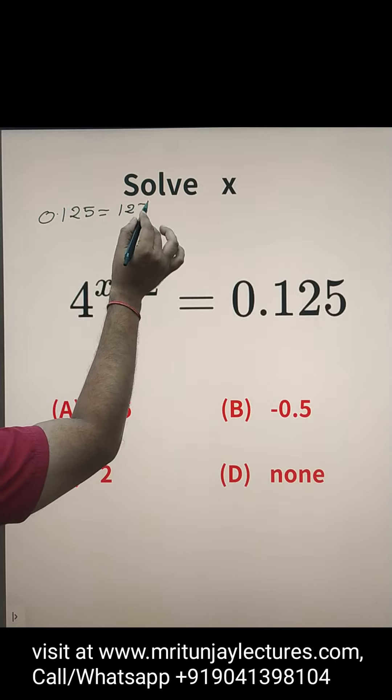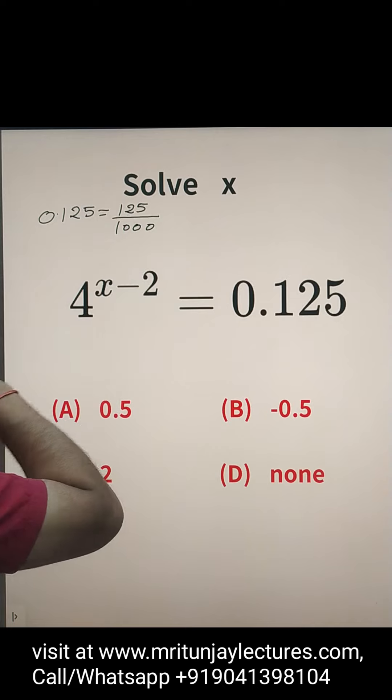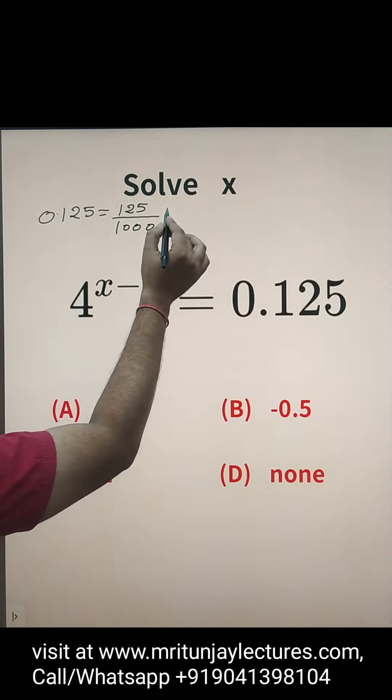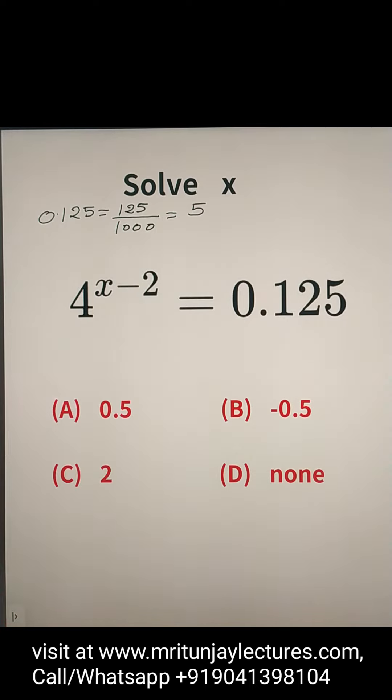Basically, 0.125 is written as 125 divided by 1000. This simplifies to 1 over 8.